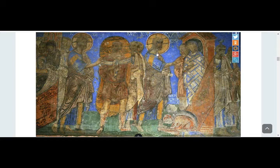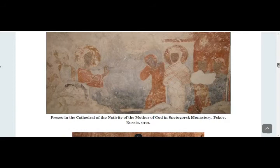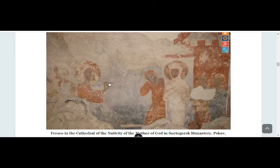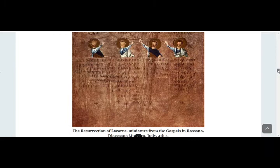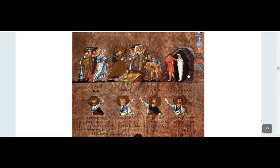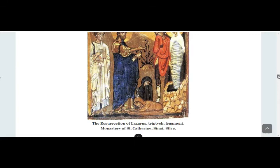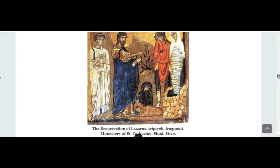This is Jesus Christ here. And this is another fresco — Russia, 1313. You can see the blessing: Jesus Christ has a beard and is blessing, and there is Lazarus of course. And here again, the resurrection of Lazarus — a miniature from the Gospels in the Rossano Museum, Italy, 4th century. We have a better depiction here: the sisters bowing and thanking Christ, and Christ has long hair and a beard. And then we have Sinai — the Monastery of St. Catherine in Sinai, 8th century. Lazarus is still bound, as you can see.